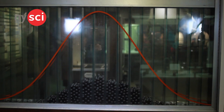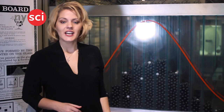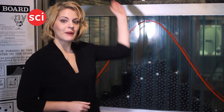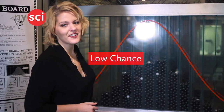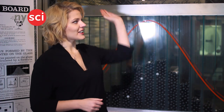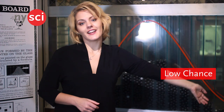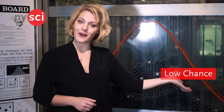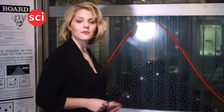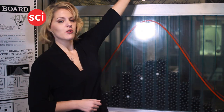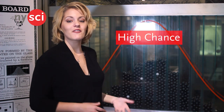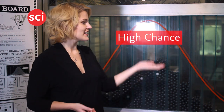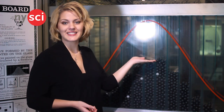As the ball falls, it hits the bars and bounces in different directions. The chances that it will bounce all the way to the left are quite low, and the chances that it will bounce all the way to the right are also quite low, so there aren't very many balls there. But the chances that it will bounce left, right, left, right and land somewhere in the middle are very high, and you can see how many balls land in the middle.